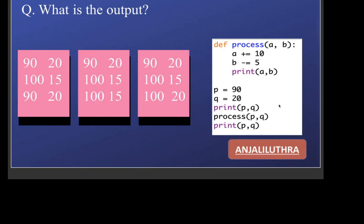What is the output of this question? It is a function-based question. p is 90 and q is 20, so 90 and 20 will print first. Then the function is called — p's value goes to parameter a and q's value goes to parameter b. So a becomes 90 and b becomes 20. We add 10 to a, making it 100; we subtract 5 from b, making it 15. So 100 and 15 will be printed — that is 115 on screen. Then we return and print p and q again, which remain 90 and 20 because the changes were made to local parameters a and b. Since nothing was returned and no global keyword was used, the changes don't reflect back. So option a — 90 20 — is the correct answer.